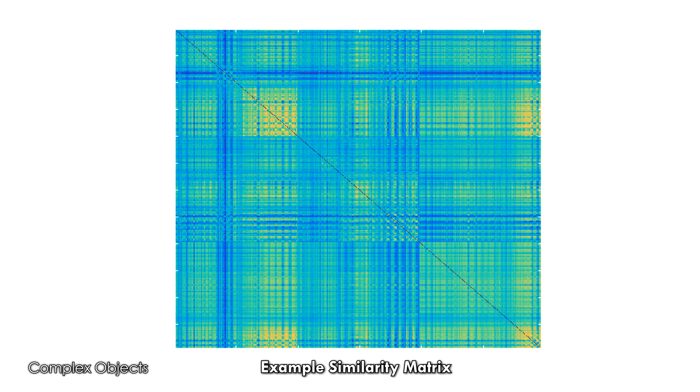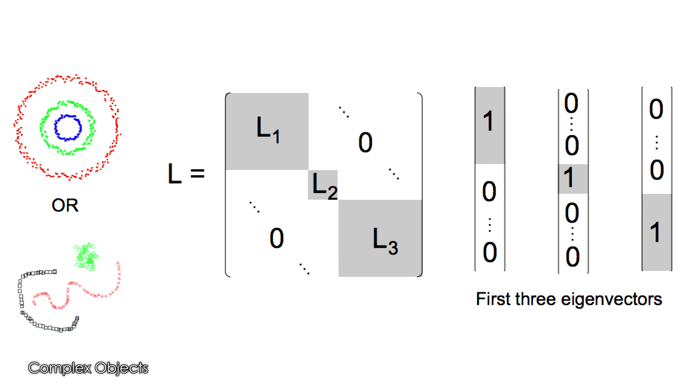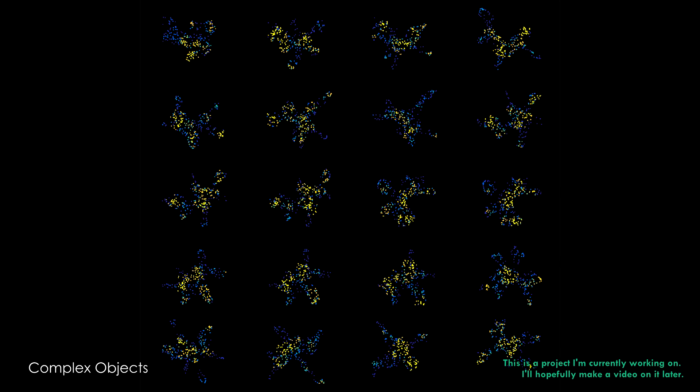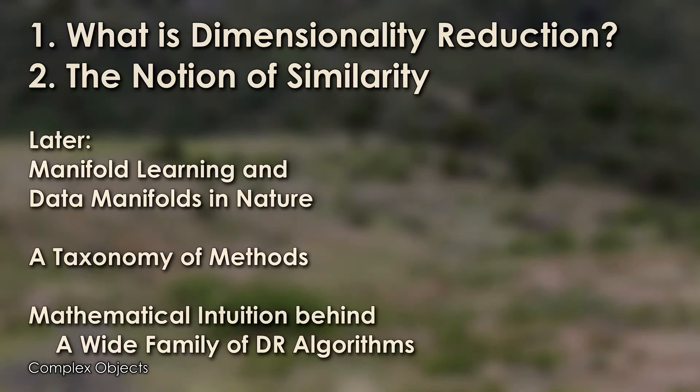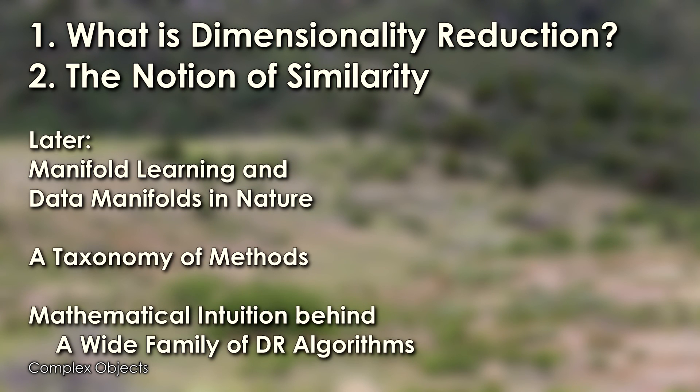The similarity matrix is extremely important for dimensionality reduction because a large family of methods will take the eigenvectors of that matrix, and once you do that you're basically done and you have your embedded data points. And in a later video I'm going to explain the intuition for exactly why that is the case. The idea of similarity is very general and it doesn't have to always characterize the relationship between two vectors. Part of what I've been doing recently has been about trying to measure the similarity between two ensembles of points based on their shape, and I may make a video about it later. But next time I'm probably going to do the third topic there.